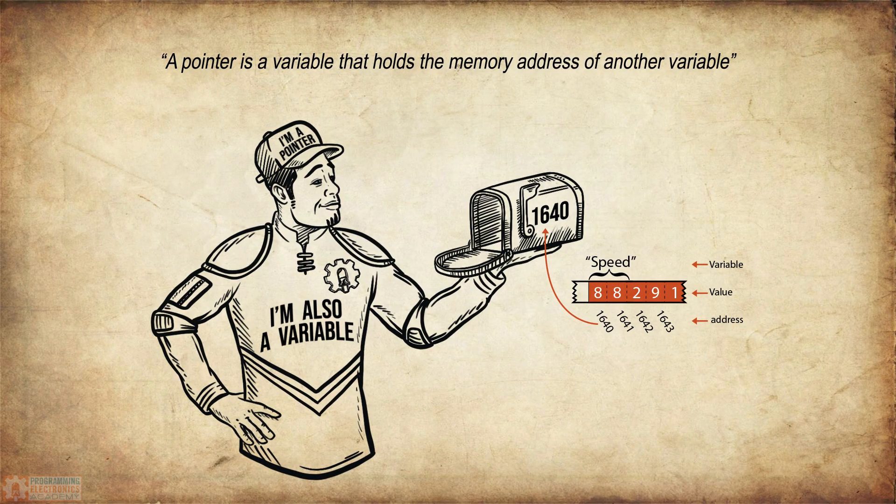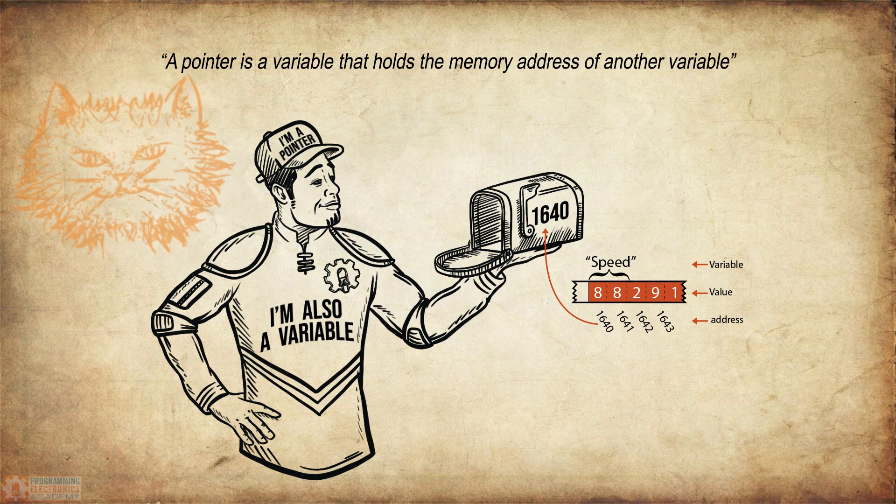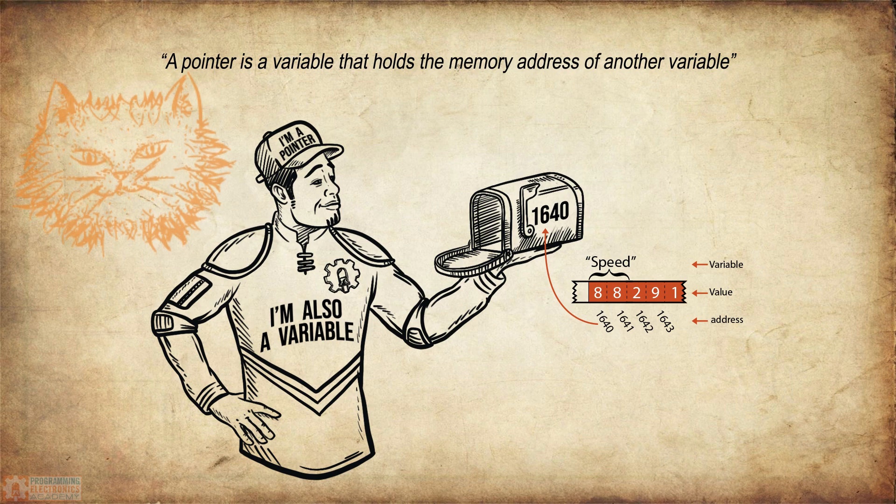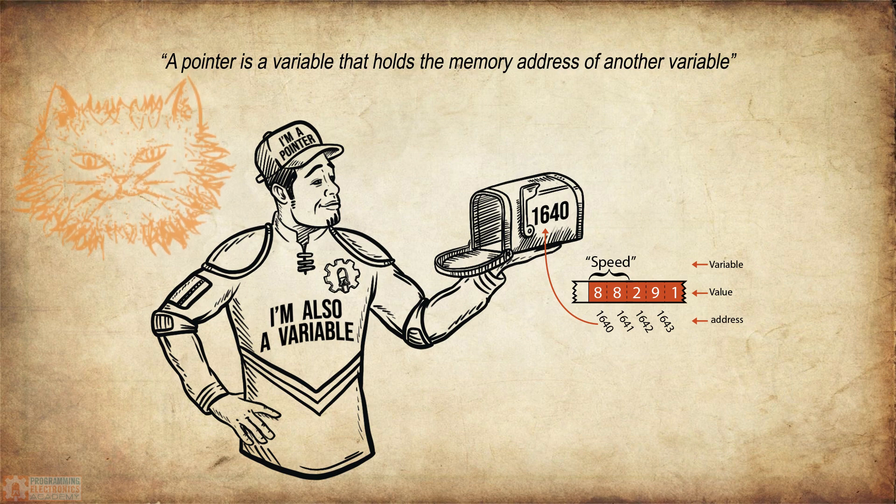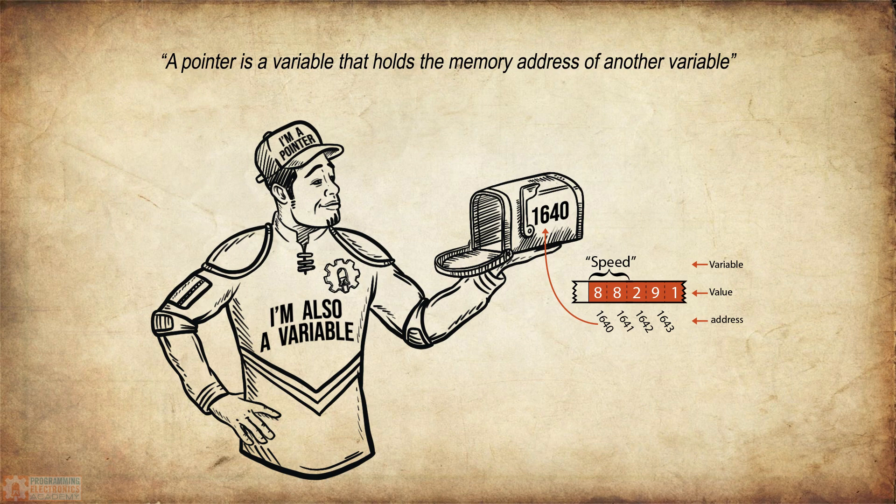All right, so now you know that a pointer is a variable that holds the memory address of another variable. This is a really important idea to try to get in your head, but you're probably really fuzzy about, well, what is a memory address and what is the use of a pointer? I'm not sure I get any of this. That is perfectly all right. This is kind of going to be a long discussion that we have as we develop the understanding of what pointers are and how to use them. In the next lesson, we're going to start talking a little bit more about memory addresses.